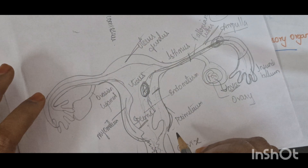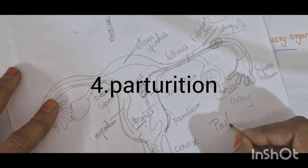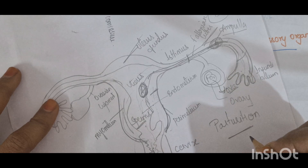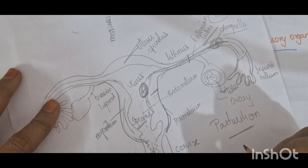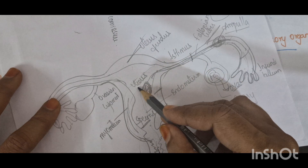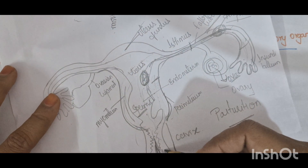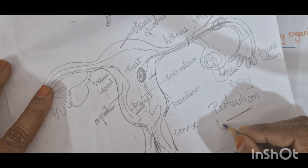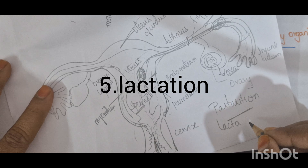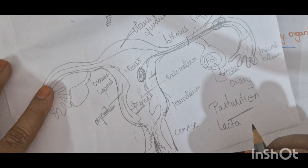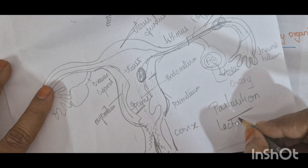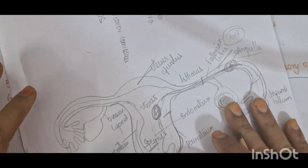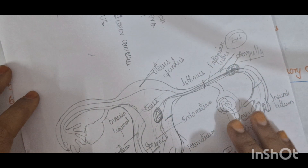Another function is parturition, which means the action of giving birth to young ones — the young ones are developed and delivered from the uterus. There is also lactation; the breast is an accessory organ that is part of the female reproductive system, and its function is lactation — giving milk to the young ones. These are the functions of the reproductive system.